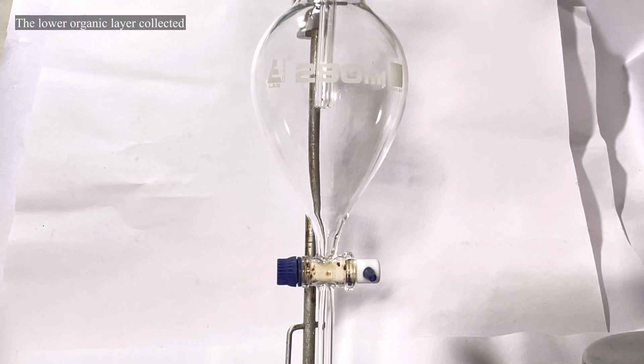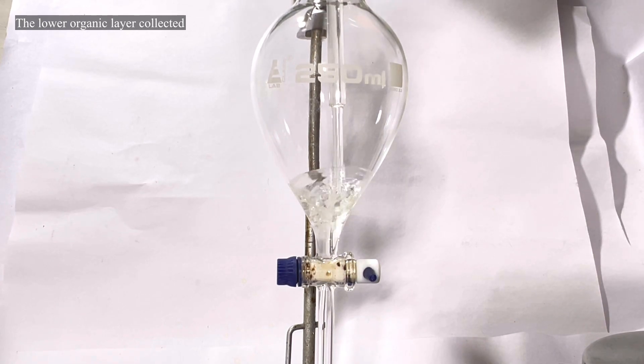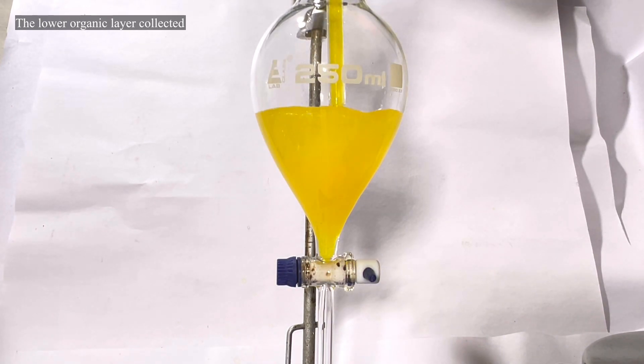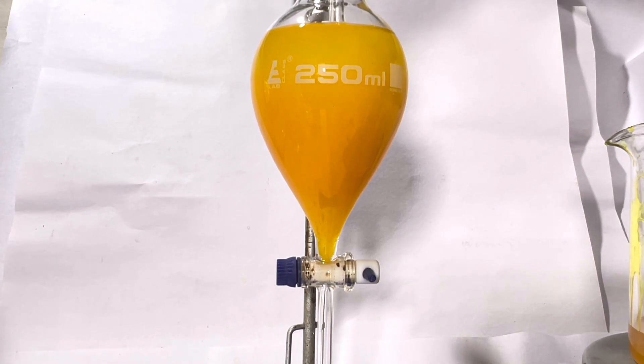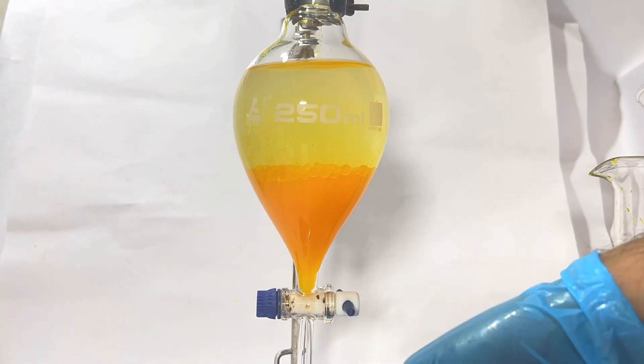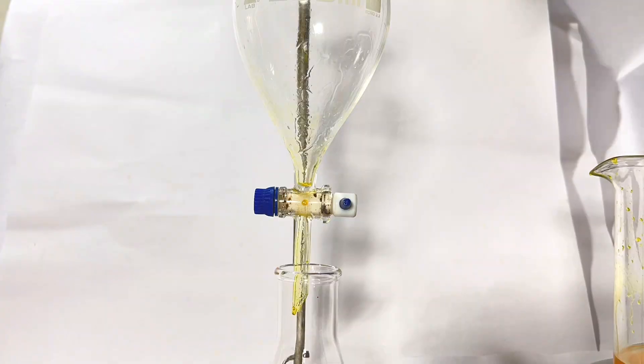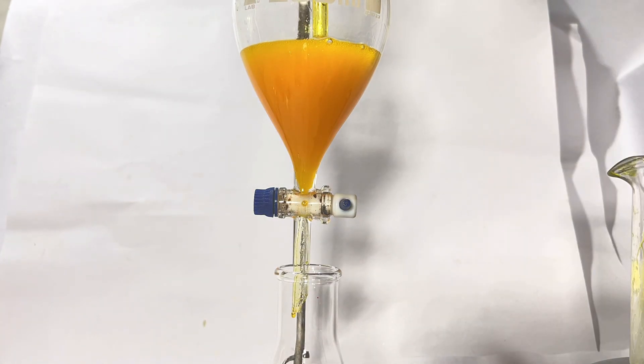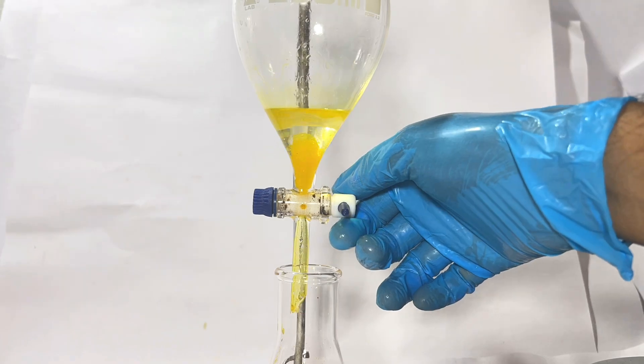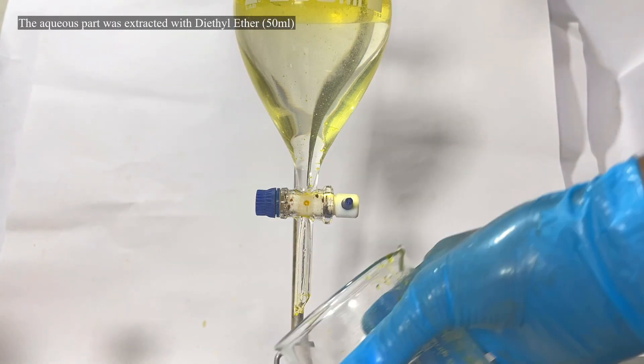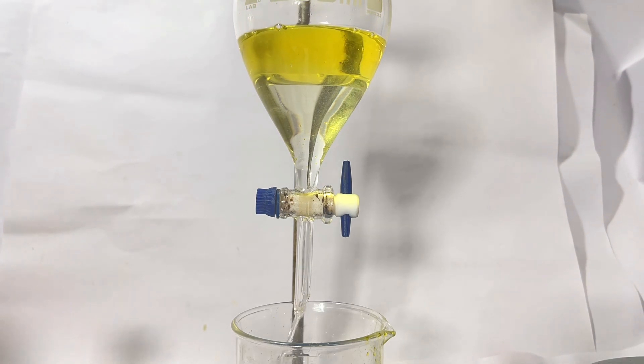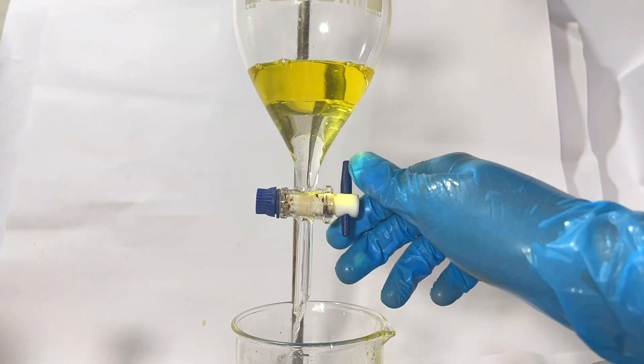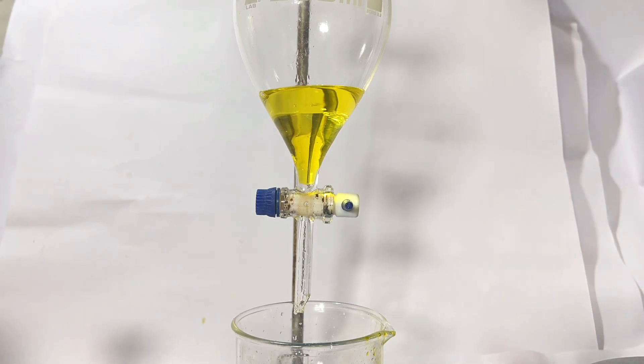The organic layer contains a mixture of unreacted benzaldehyde and cinnamaldehyde. The aqueous part was then extracted twice, each time with 25 ml of diethyl ether and the ether layer was transferred to the crude mixture of benzaldehyde and cinnamaldehyde.